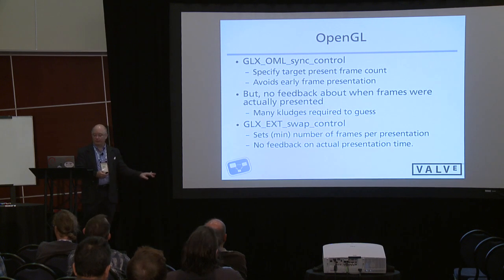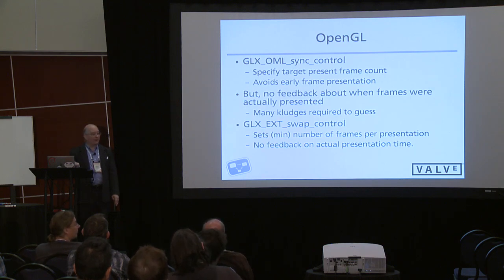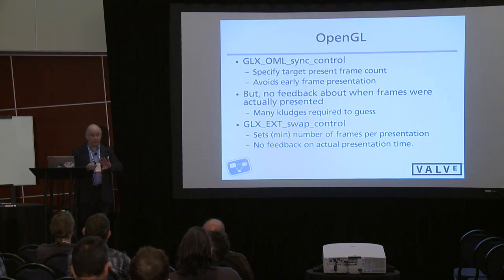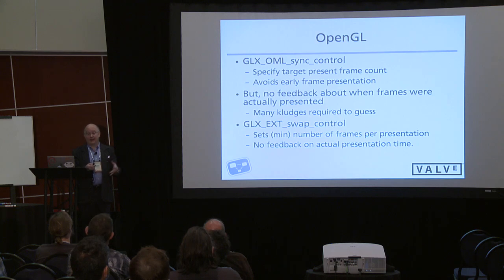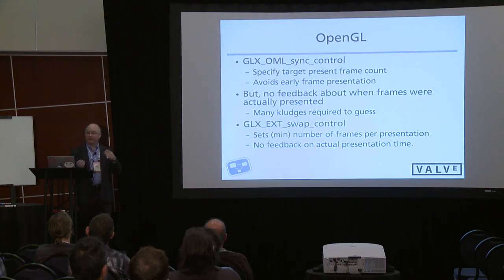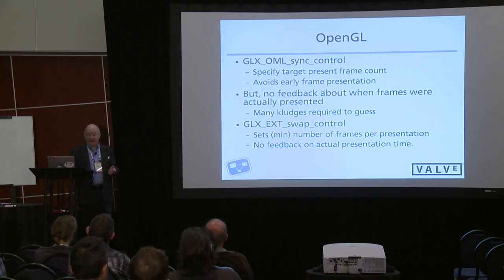I'll talk a little about OpenGL, because it was the genesis of the current X mechanisms. The extension I looked at most closely was OML sync control, which lets the target specify which absolute frame count the frame will be displayed at. It has some complicated math about modulus and divisors that you can mostly ignore, but you can actually specify an absolute frame time. Unfortunately it provides no feedback as to whether that was successful. Another earlier control is swap control, which allows you to specify a relative interval between frames — that's how applications used to switch from 60 Hz to 30 Hz by setting the swap control value from 1 to 2. Again, no feedback when the presentation actually occurred.